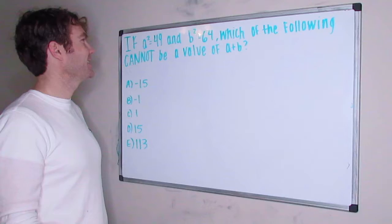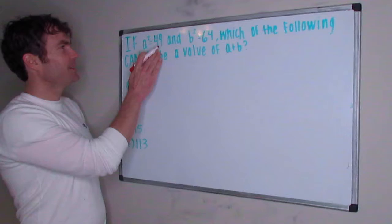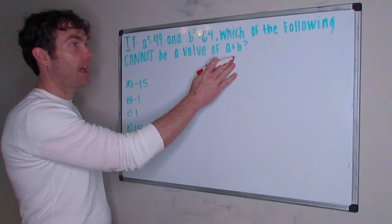Hey YouTubers, it's Josh again from the Test Experts doing more ACT problems. Today's problem: if a squared equals 49 and b squared equals 64, which of the following cannot be a value of a plus b?